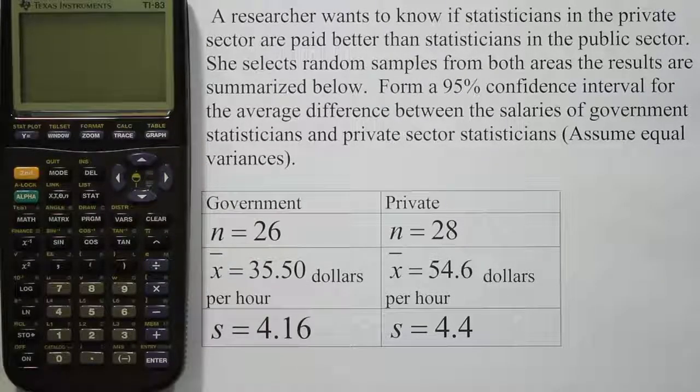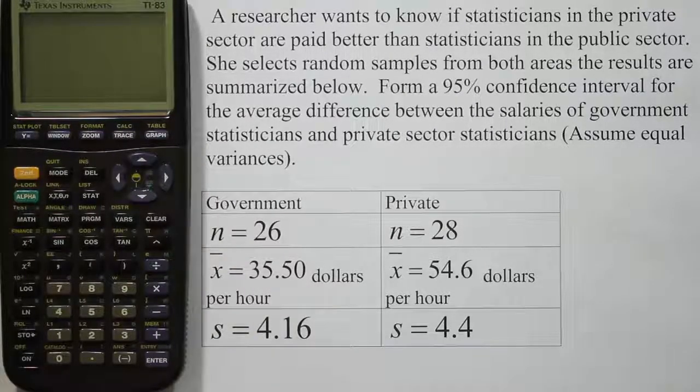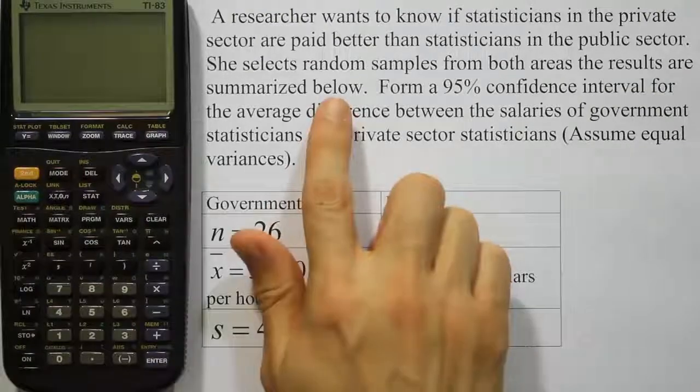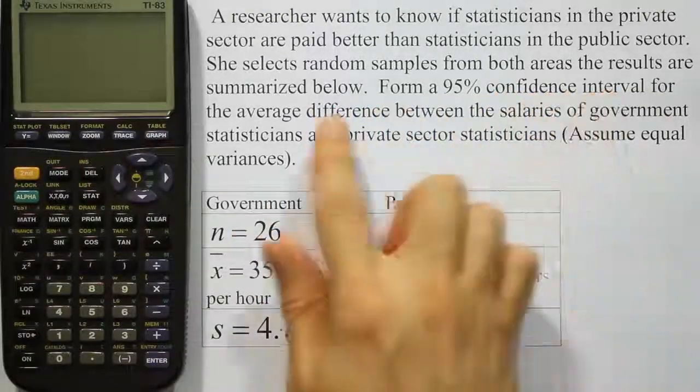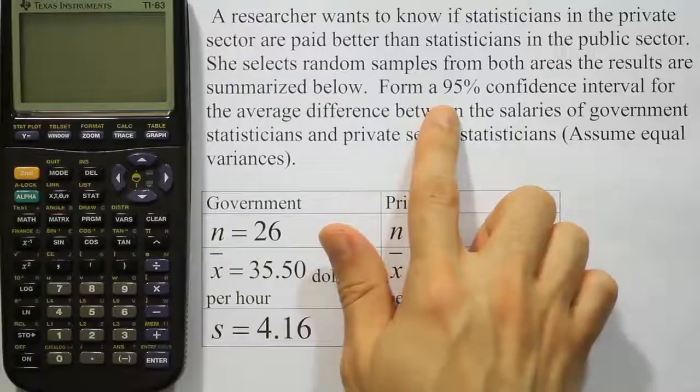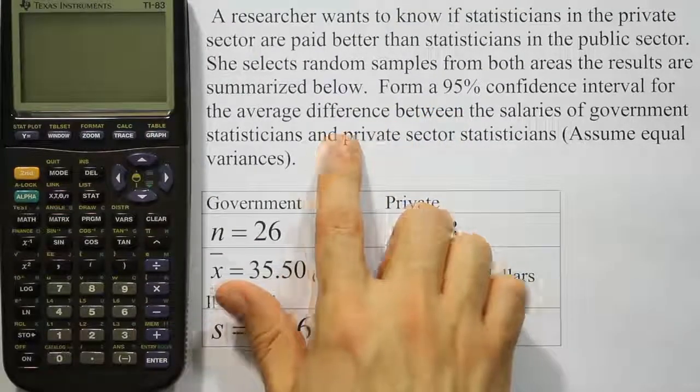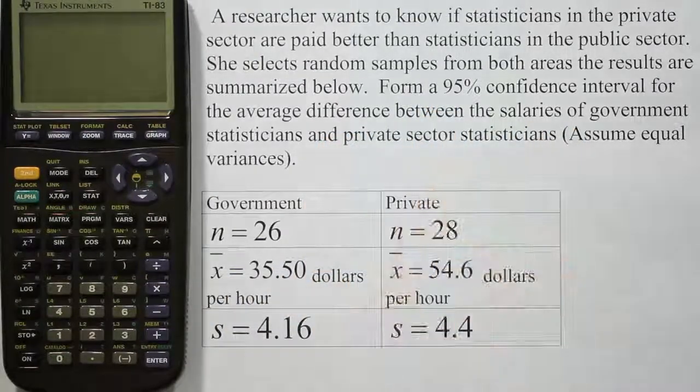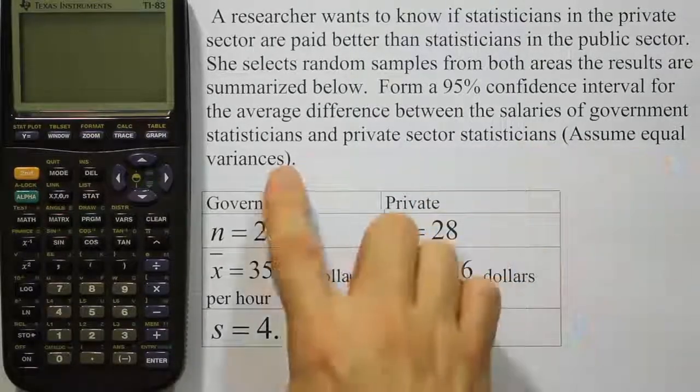A researcher wants to know if statisticians in the private sector are paid better than statisticians in the public sector. She selects random samples from both areas. The results are summarized below. Form a 95% confidence interval for the average difference between the salaries of government statisticians and private sector statisticians. Assume equal variances.